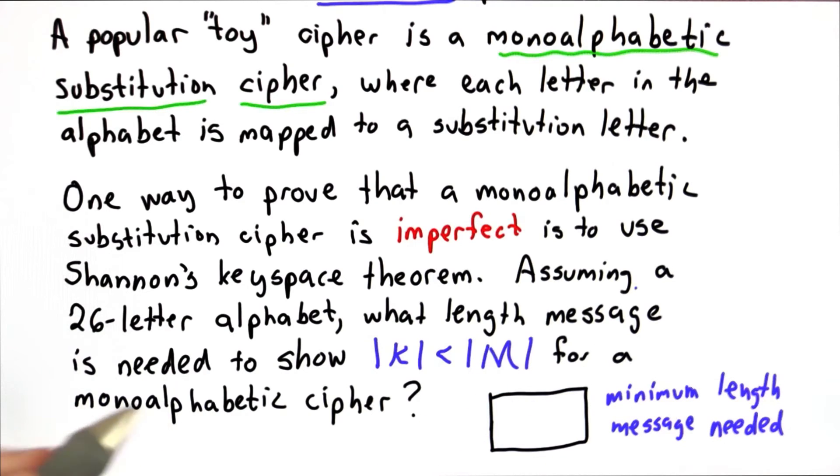Assuming a 26 letter alphabet, what length message do we need to show that the key space for the monoalphabetic cipher is too small to be a perfect cipher?